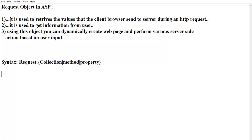There are different types of collections available in the request object. The first one is the client certificate collection. This collection holds the field keys and values from the security certificate that the client browser passes to the web server. If you want to retrieve any value from the client certificate, then you can use this collection.